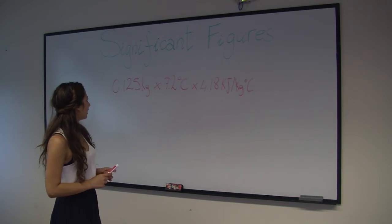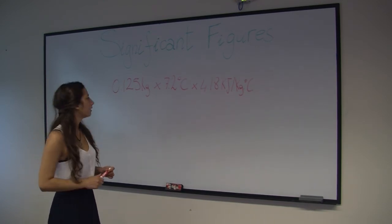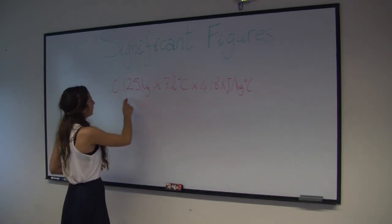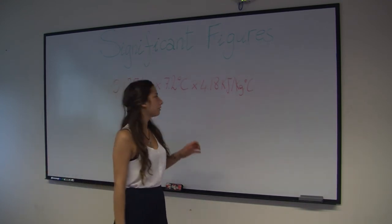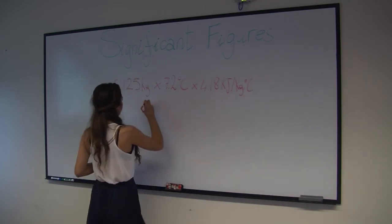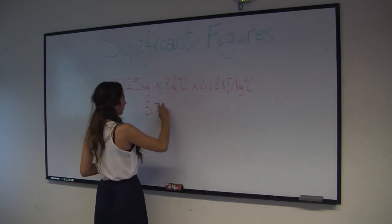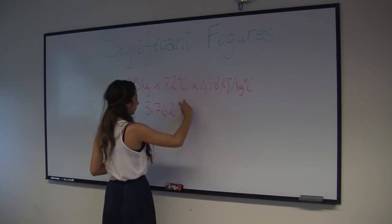Let's say I want to find out the amount of energy needed to raise the temperature of this mass of water by 7.2 degrees C. If we compute this exactly, we'll get 3.762 kJ.